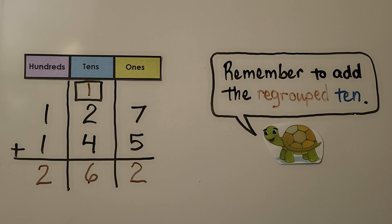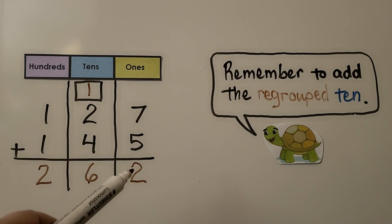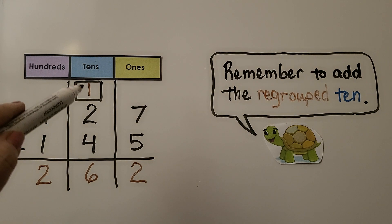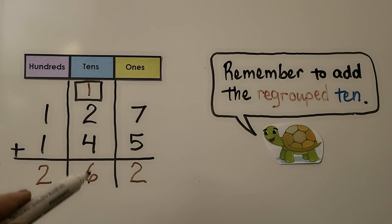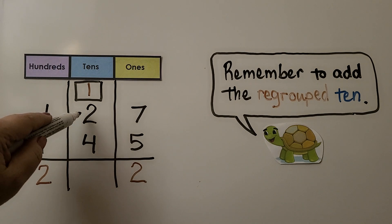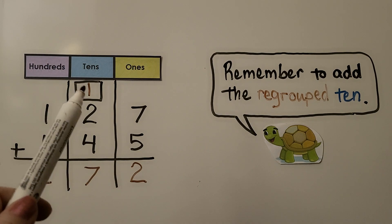We need to remember to add the regrouped ten. Look at this problem here. Look what was written. We have seven plus five, which is twelve. And a ten got regrouped into the box and a two got put in the ones place. But then when the tens were added, this box was forgotten and it was just two plus four is six. And that's wrong. That'll be a wrong answer. This should be two plus four is six plus one more is seven. That's the correct answer. So remember to add the regrouped ten that's in that box.